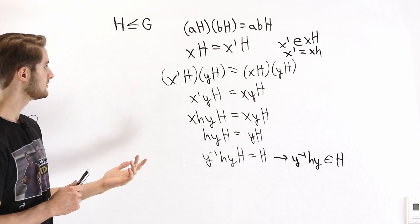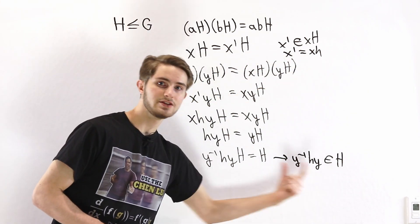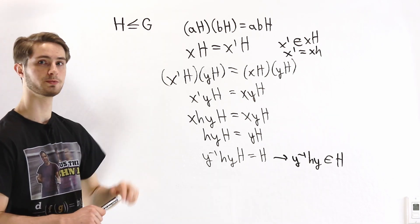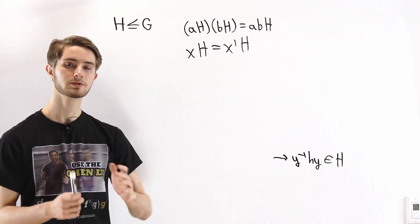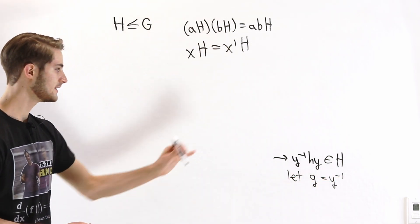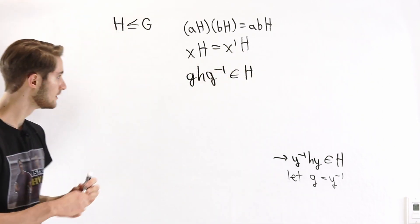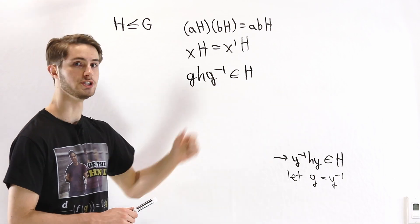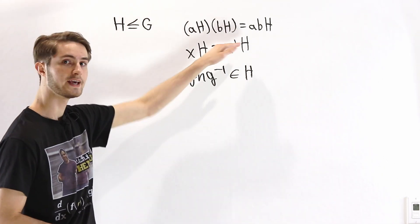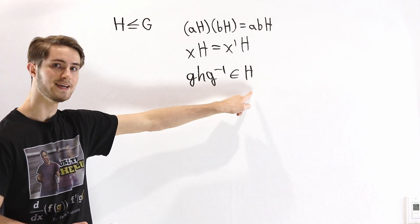In this process we could have chosen any X, X', and Y, which means we could have gotten any H we want. So this condition must hold for every Y in the group and every H in the subgroup. To make this look more like a textbook, let G equal Y inverse. Then the condition becomes: for every G in the group, we must have GHG inverse being in H. This process, where we go from H to GHG inverse, is called conjugation of H by G. So in order to have well-defined multiplication, we need that for every element in the subgroup, if we conjugate it by an element of the group, we stay in the subgroup.